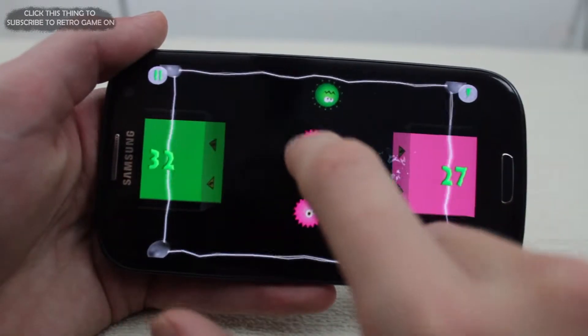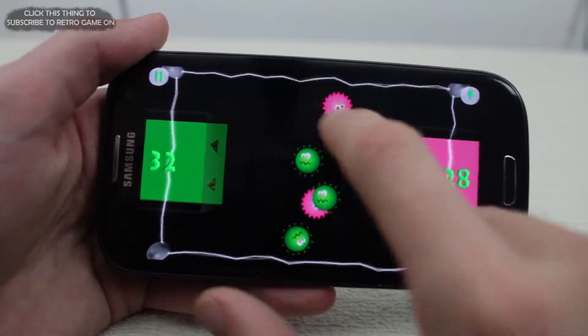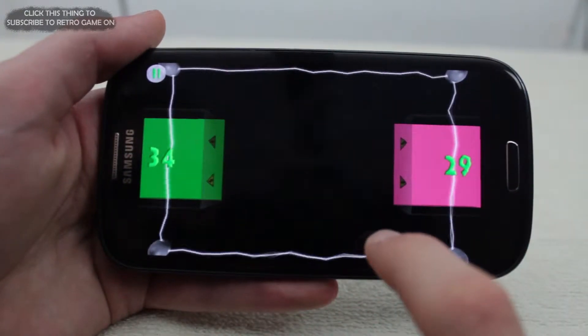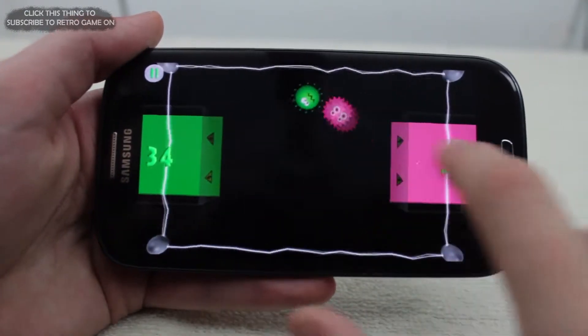On top of that, if you have a germ floating around for too long, it will somehow escape, causing you to lose again. The longer you play a round, the faster the germs spawn, causing the game to gradually get more and more difficult.